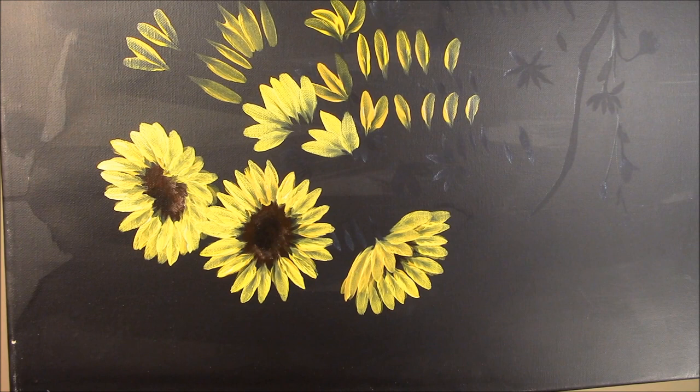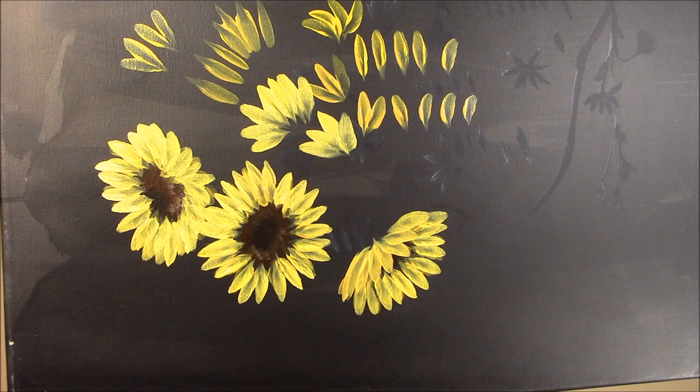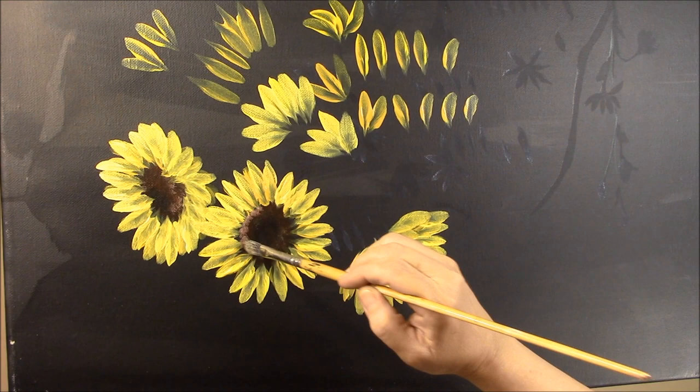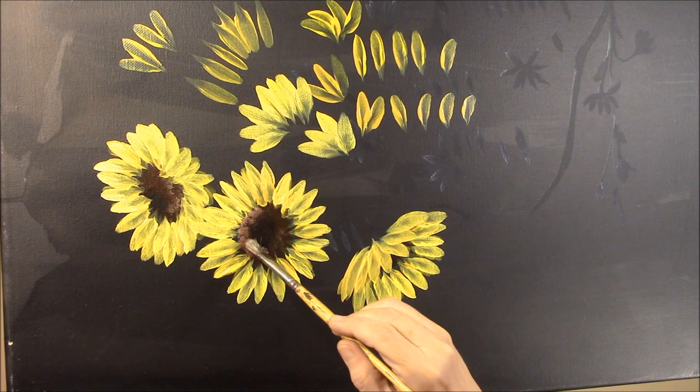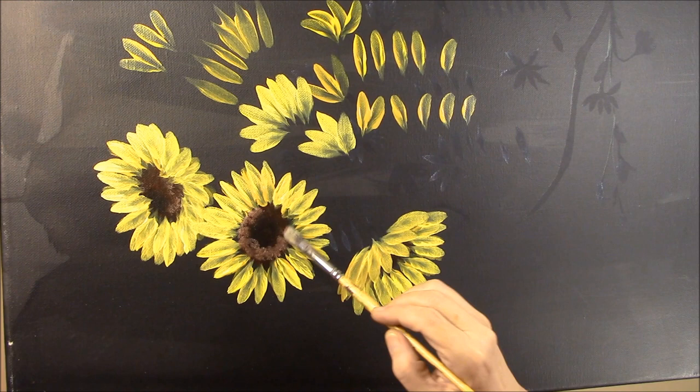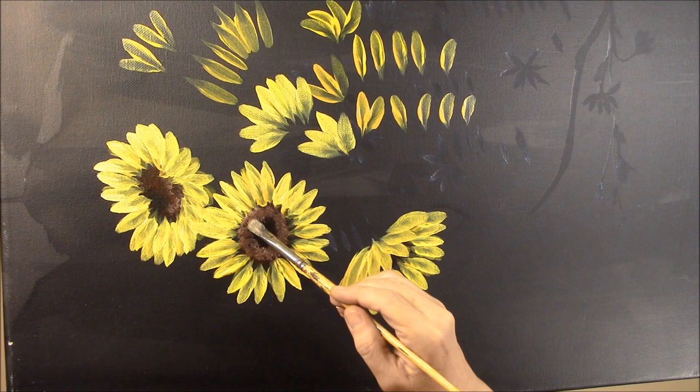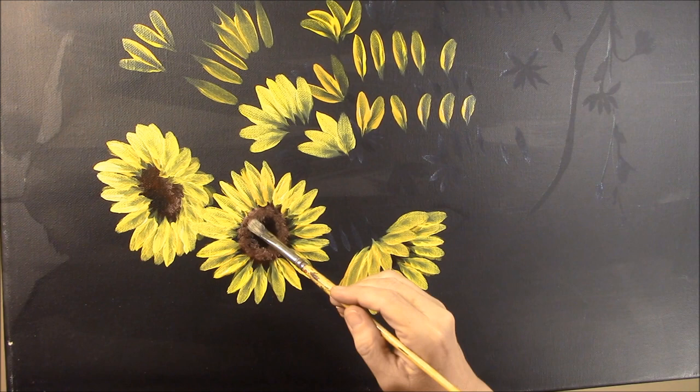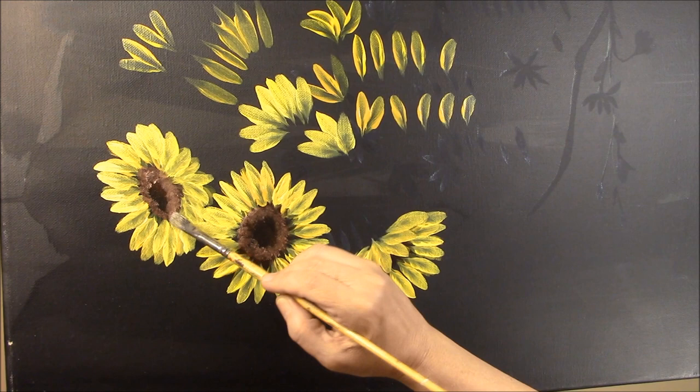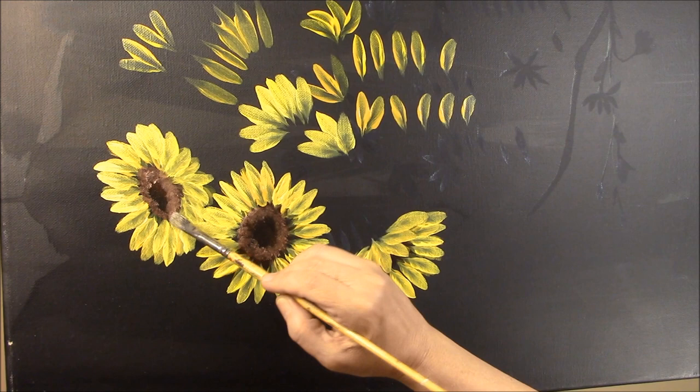So at this point, take a filbert, go into some brown, and put some of the edge back in. You could also add a little bit of crimson there if you wanted to. I haven't got any on the brush this time, but that's a nice bit of reddish to the brown. And leave your indent in the center.